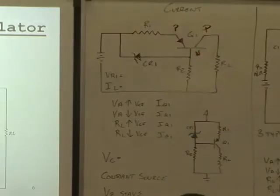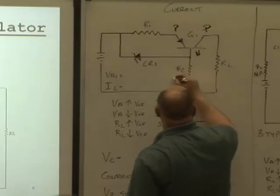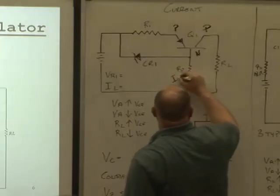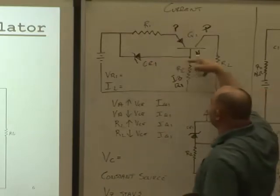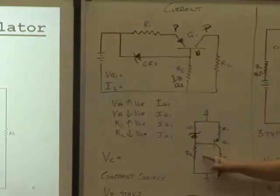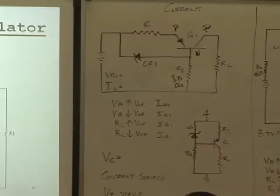Is it the regulating element? Yes, it is. What does R2 do? Base current. Q1, look, it's tied right to it. And it has to do with the zener current as well. Look at the redraw. Doesn't it look like R2 establishes the base voltage? Sure. It does.